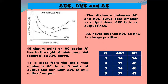The minimum point on AC lies to the right of the minimum point of the AVC curve. From the table, the AVC minimum is at 4 units of output and the AC minimum is at 5 units of output — that is, at a higher level of output. Minimum AC is at 5 units of output and minimum AVC is at 4 units of output.